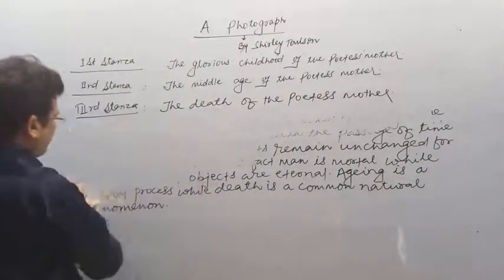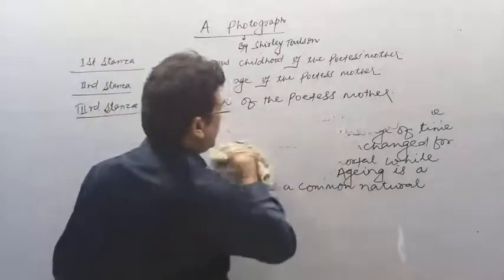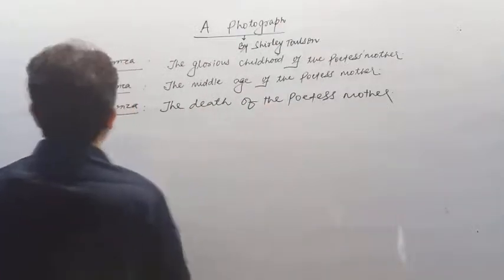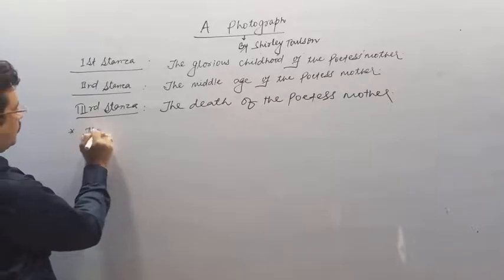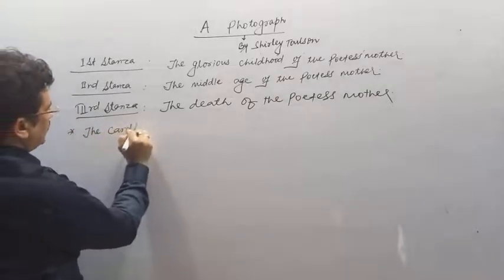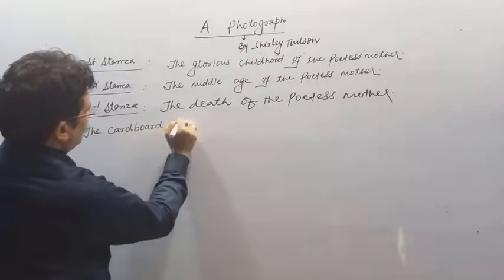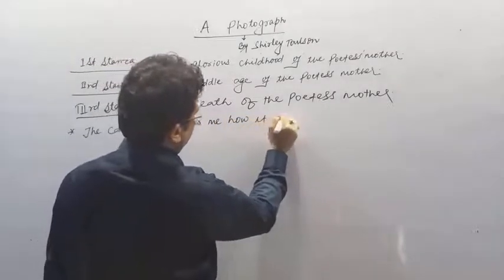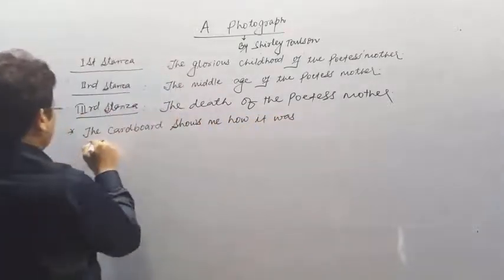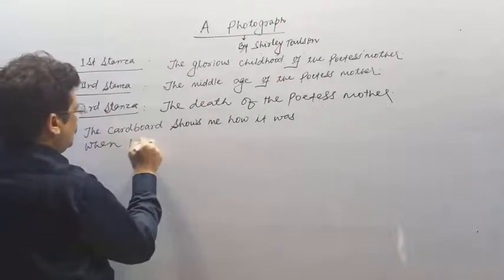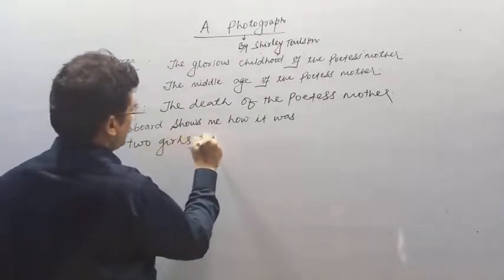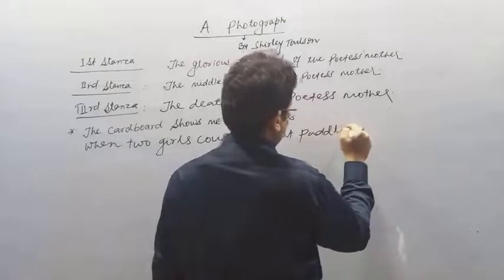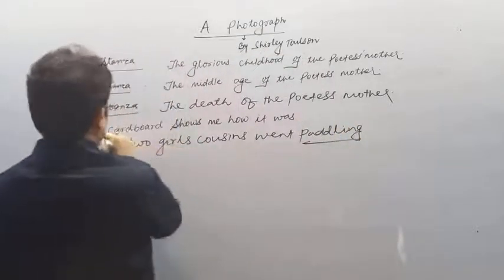Now we will explain this poem line by line with poetic meaning. The first line is: 'The cardboard shows me how it was when two girls, cousins, went paddling.' यहाँ पर cardboard, photograph के लिए poem में आया है।